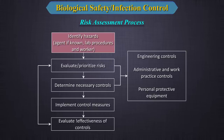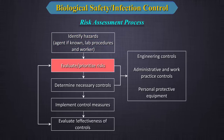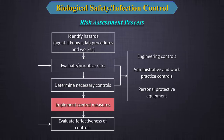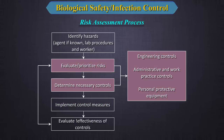The process also involves evaluating the likelihood that an exposure would cause a laboratory-acquired infection and the severity of consequences if such an infection occurs. Then, develop, implement and evaluate controls to minimize the risk. The risk assessment process flowchart begins with identifying hazards — the agent if known, the lab procedures, and worker hazards — then evaluating and prioritizing risks, and determining necessary controls.